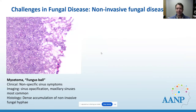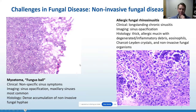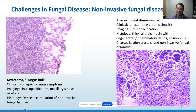Non-invasive fungal disease happens very commonly in the sinuses. You can have a mycetoma where fungus colonizes and presents with nonspecific symptoms — not fulminant like invasive fungal disease — and we see dense hyphae, in this case Aspergillus. We also have allergic fungal rhinosinusitis, which occurs in long-standing chronic sinusitis. These can look scary if you're not familiar because they have a grungy basophilic look, very thick mucin, and sometimes tigroid stripes — a good clue for allergic mucin — as well as Charcot-Leyden crystals, which can be helpful.